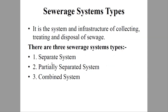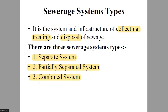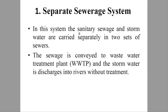A sewage system is a system of infrastructure for collecting, treating, and disposing of sewage. Three sewage systems are: first, the separate system; second, the partially separate system; and third, the combined system. In the separate system, sanitary wastes and storm water are carried separately in two sets of sewers — one for household waste from rainfall and one for sanitary sewage.